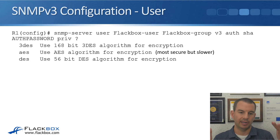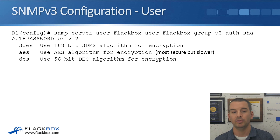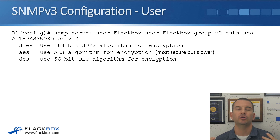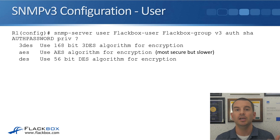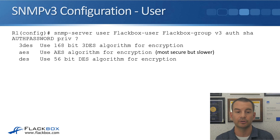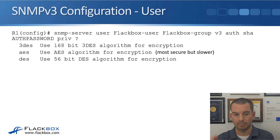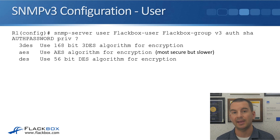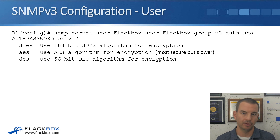So I've got 'snmp-server user flatbox-user' in the 'flatbox-group', SNMP version 3, auth SHA, and I'm using an authentication password of 'authpassword' for this example. We configure the authentication and privacy settings separately. I've configured the authentication - now I configure the privacy. I say 'priv' and use the question mark to see the options: I can use DES, triple DES, or AES encryption. AES is the most modern and most secure of those, but it's a little bit slower.